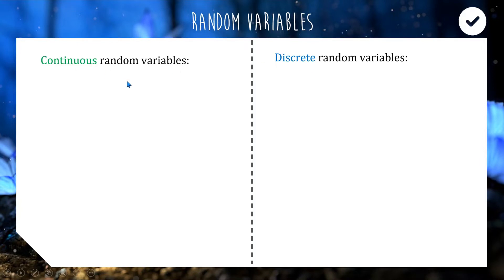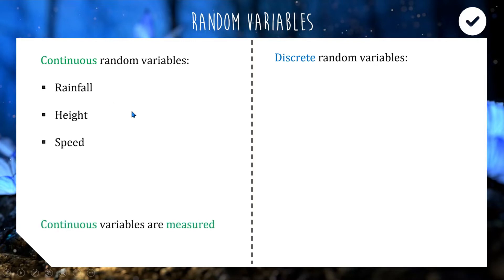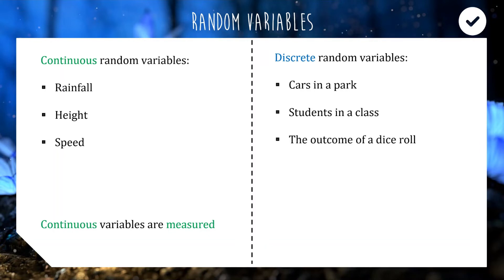Some examples of continuous random variables include measuring rainfall, measuring someone's height, or measuring the speed of a car. These are types of data obtained by measuring. Discrete random variables, by contrast, include things like the number of cars in a car park, the number of students in a class, or the outcome of a dice roll — outcomes like one, two, three, four, five, six. These are obtained by counting, not measuring.